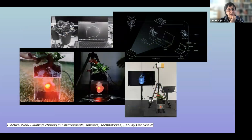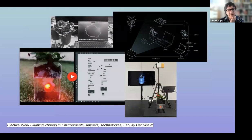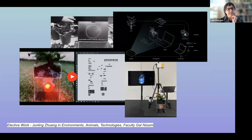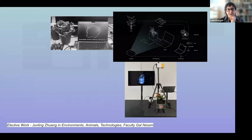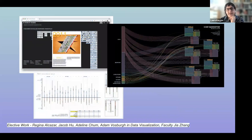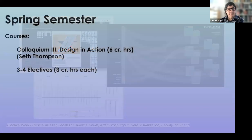This is Jin Ling Zhang's project for a particular seminar taught by Gal Nissim — Animals, Environments, and Technologies — an amazing seminar which engages with sensors, concepts, and ideas bringing together sensors to analyze the ways in which animals, technologies, and humans come together. This is the result of the data visualization seminar taught by Jia Zhang, who worked in the Center for Spatial Research for around four years and is now part of an amazing group at Microsoft doing experiments in data visualization. Amazing work always comes out of that seminar.